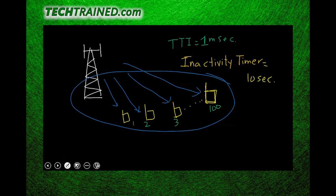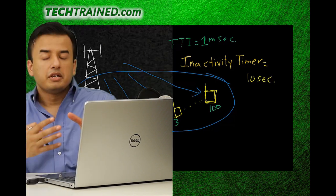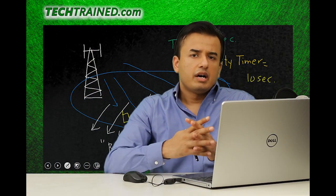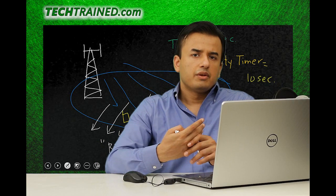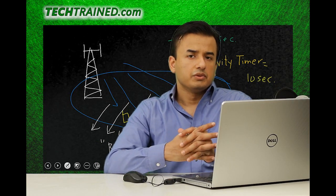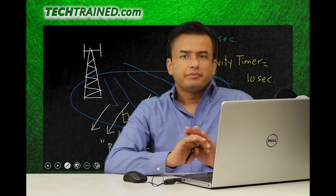If the inactivity timer expires — say after 10 seconds of no activity — eNodeB makes an executive decision and moves those users into idle mode. This is called a normal release. For example, if the first three of the 100 users are inactive and the timer expires, they are moved to RRC idle mode. This frees up resources for other users who want to connect, rather than letting inactive users hold those resources indefinitely.